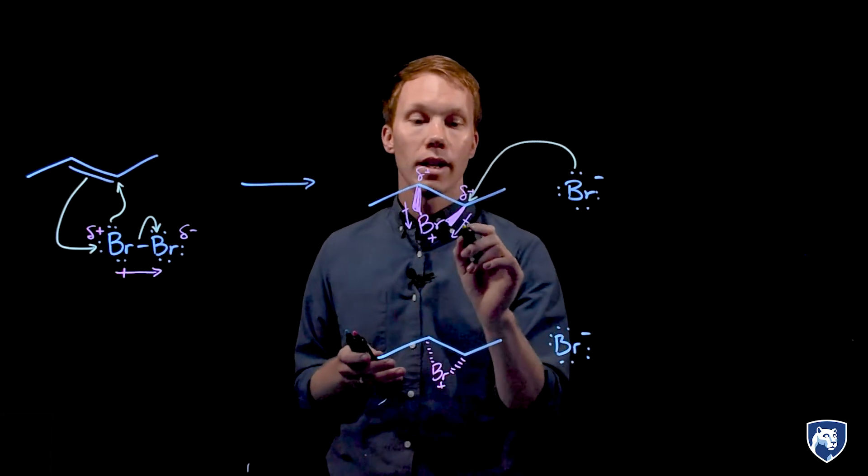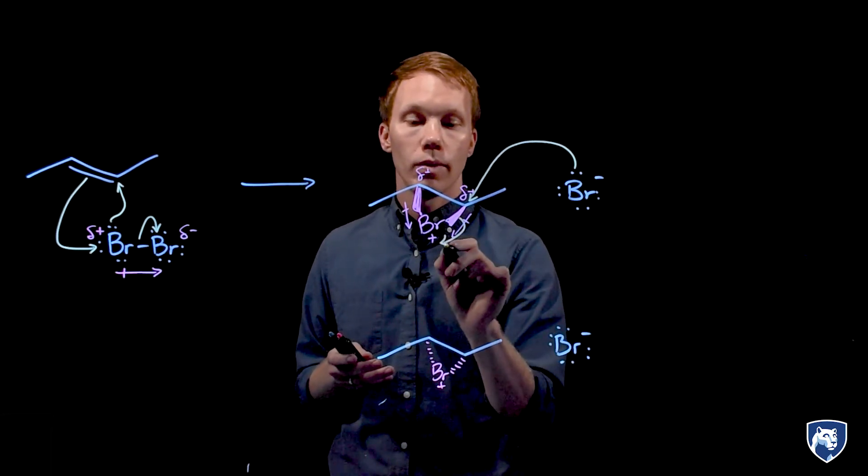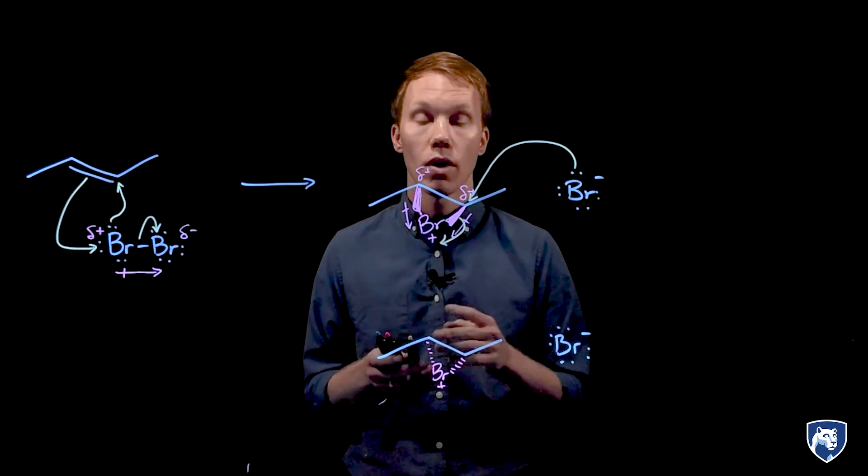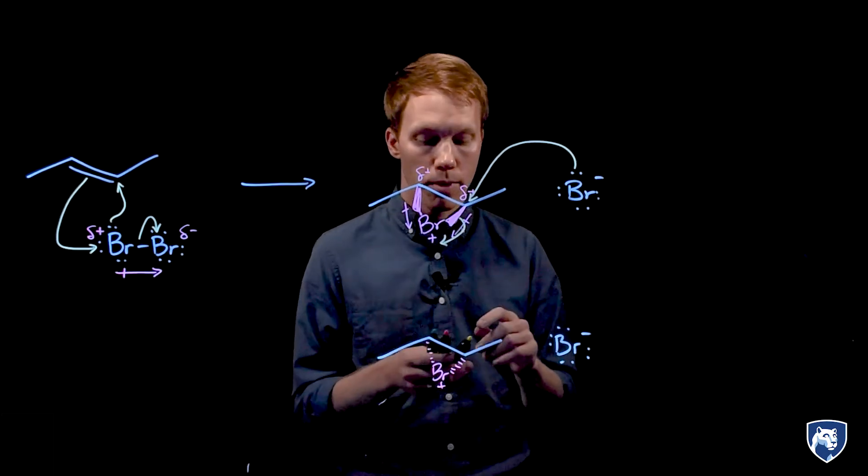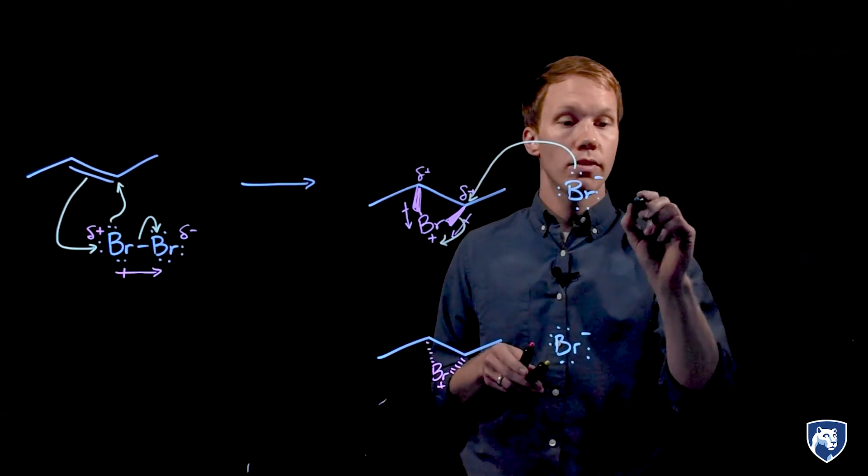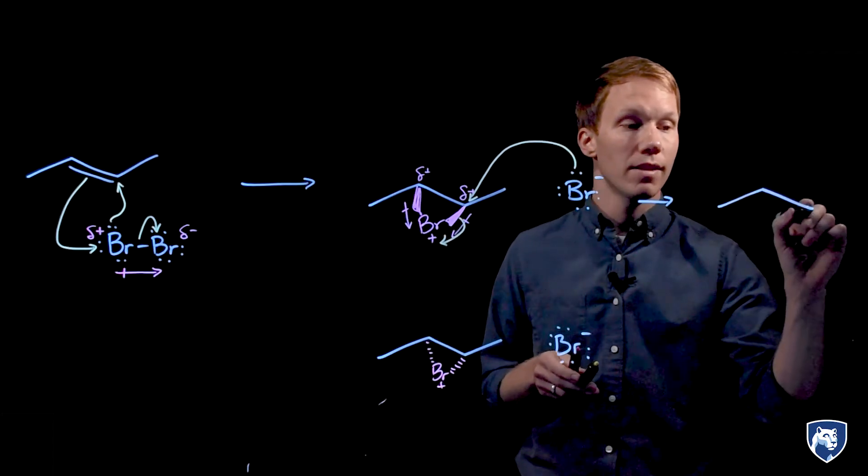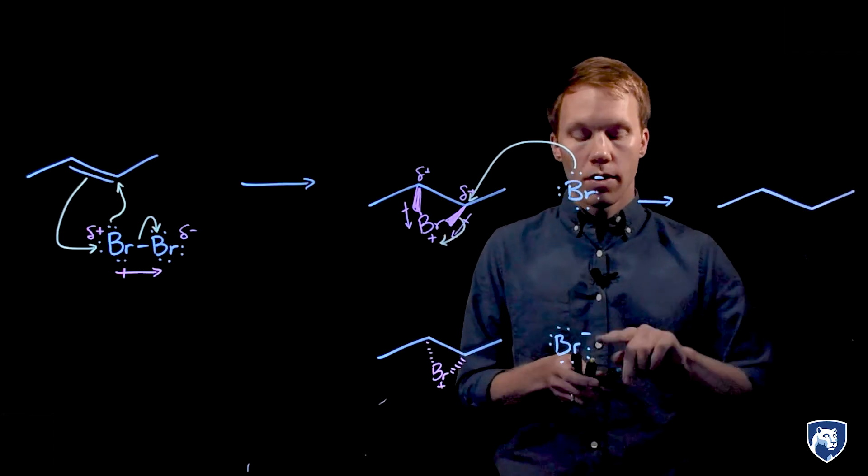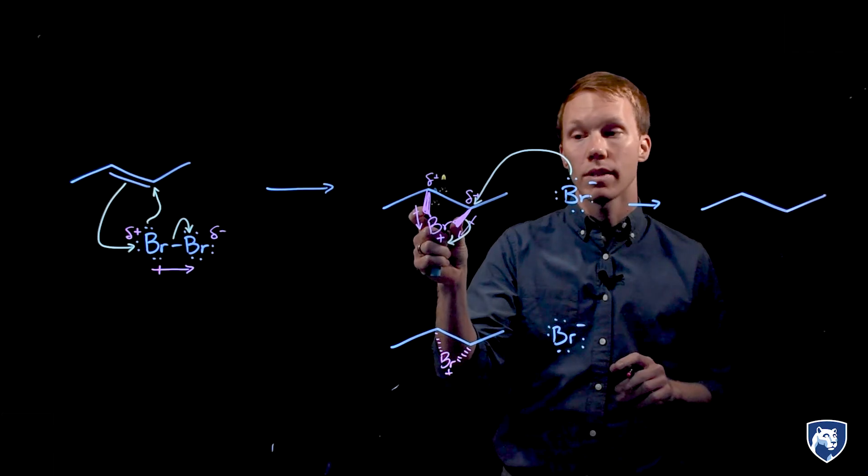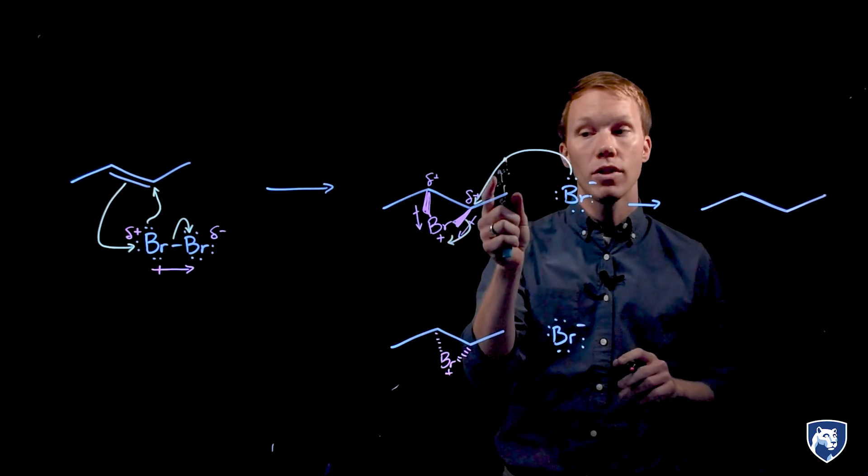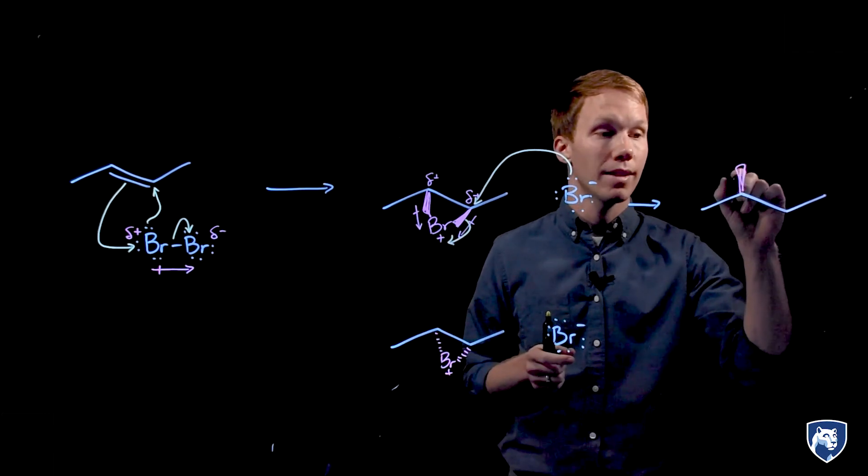The nucleophile attacks the electrophile, at which point the bromine-carbon bond also breaks to make way for that new bond. This new bond must form on the opposite face of the molecule. The bromonium ion is blocking one face of this molecule, and therefore the bromide nucleophile must come in from the back side.